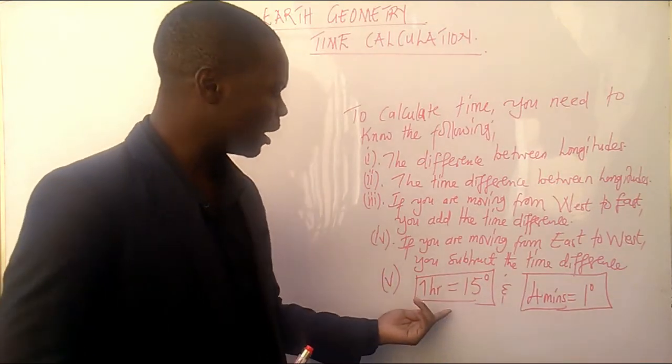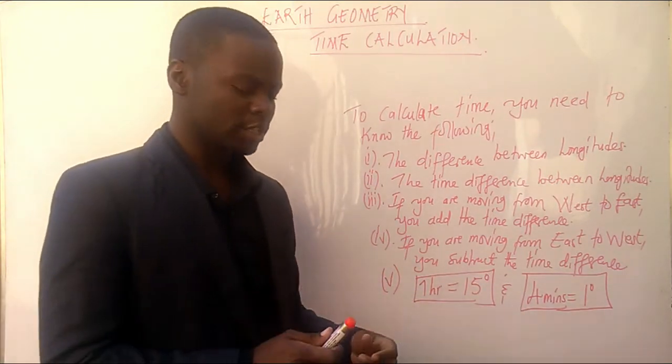Which is this: 1 hour is equal to 15 degrees and 4 minutes is equal to 1 degree. So, where have I gotten this? Where have I gotten this? Very simple.